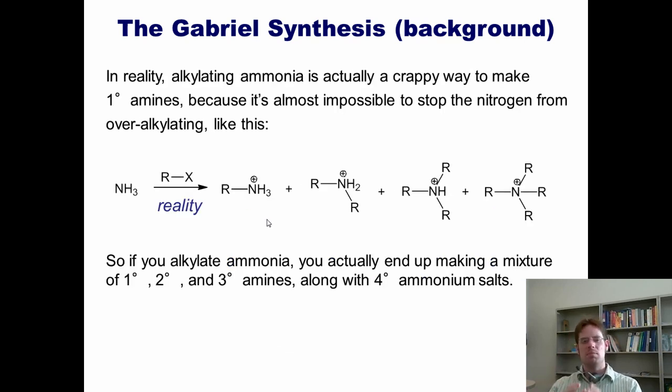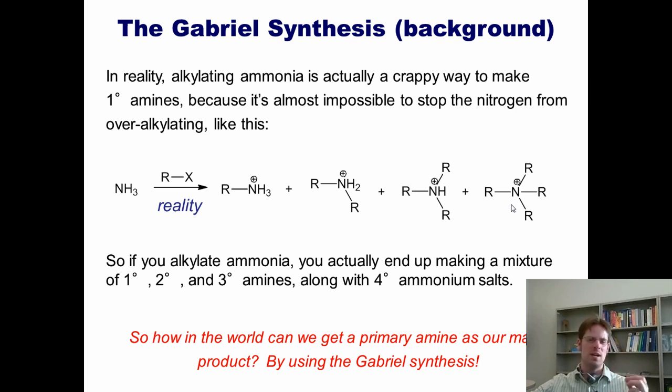In reality, alkylating ammonia is actually a very crappy way to make primary amines, because it's almost impossible to stop the nitrogen from over-alkylating. You stir with excess alkyl halide and get a mixture of monoalkylated, dialkylated, trialkylated ammonia, and quaternary ammonium salts. You neutralize these three and end up getting a mixture of primary, secondary, and tertiary amines, along with isolated ammonium salts as a precipitate. So the question is, is there anything that we can do to isolate primary amines as our major product? The answer is yes.